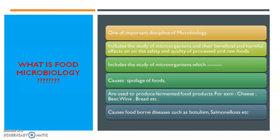These microorganisms cause spoilage of foods. We always see in our homes or farms that microorganisms spoil foods as well as fruits and vegetables. There are also different types of microorganisms present in nature which are used to produce fermented food products — for example, cheese, beer, wine, and bread. These are examples of fermented foods produced by different types of microorganisms.